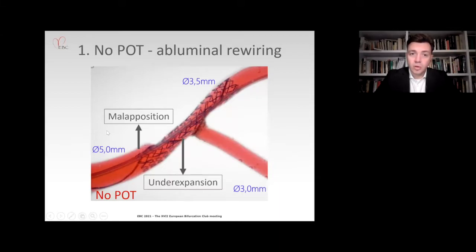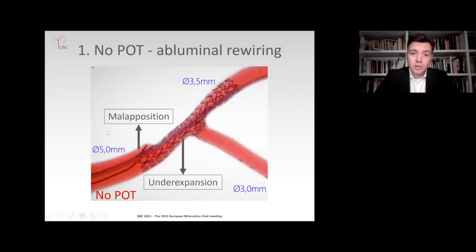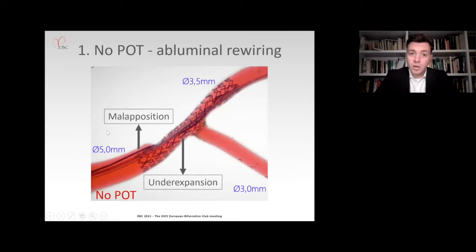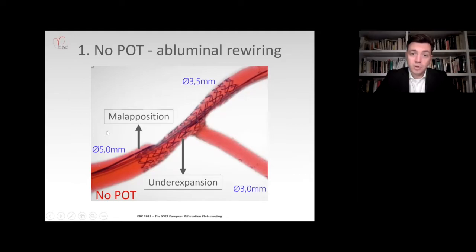If you do not perform POT at all, what is naturally going to happen — and you see it here on the Bench, and thank you to Dr. Lefevre for performing this Bench testing meticulously — is that you can rewire abluminally. You basically go behind the struts and proceed into the stent lumen without noticing this on angiography. The great value of this Bench testing is that it shows us that not seeing this on angiography has dramatic procedural consequences. Not performing POT leaves you with malapposition and under-expansion, and the malapposition at the very proximal edge of the stent can lead to abluminal rewiring.